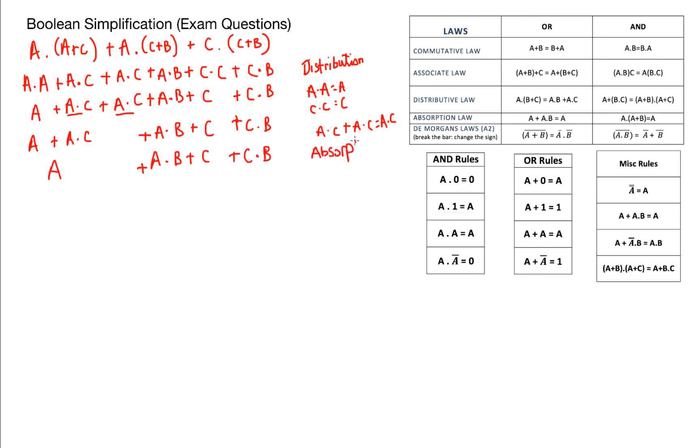So once I've done that I can use the law of absorption again to say A and B OR A is just A and you can probably work out the next step here. I've got the law of absorption for the third time which leaves me with A OR C. And that's our final answer.